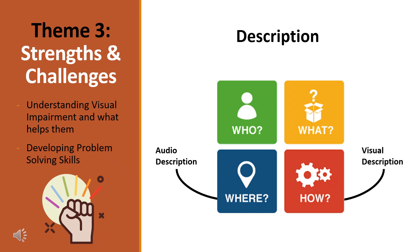The next theme focuses on children knowing both their strengths and challenges. This involves firstly understanding their visual impairment and being able to explain it to others. This can also be supported when children understand what is happening in their environment, particularly as they may not be able to see what is taking place. This can be achieved through additional description of visual information to understand the content and the context and provide fuller access to society.